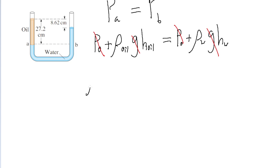So our equation now simplifies to the density of oil times the height of the oil is equal to the density of the water times the height of the water. And since the density of oil is what we're trying to find, we'll algebraically solve that by dividing both sides of the equation by the height of the oil. So rho sub w times h sub w divided by h sub oil.